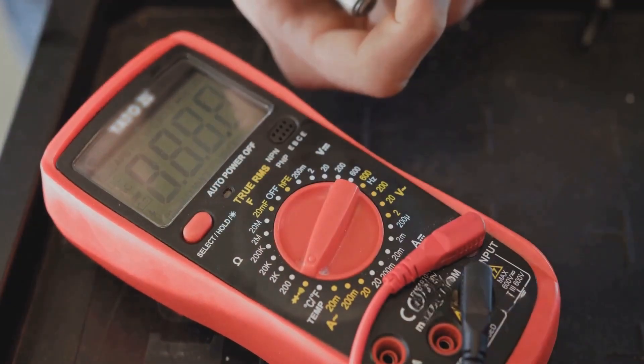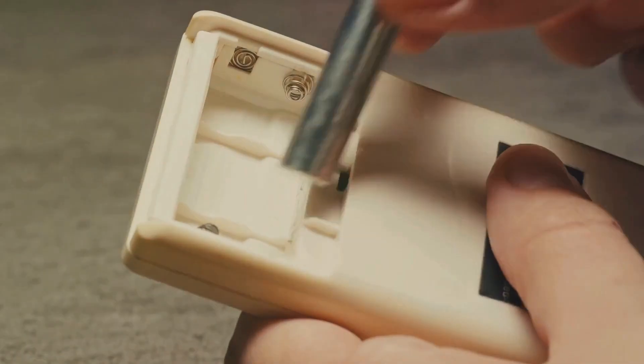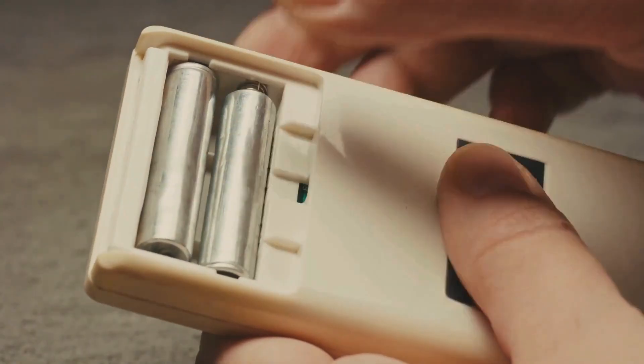Step 1: Check your batteries. This might seem too simple, but it's often the root cause of the problem. It sounds basic, but batteries are often the culprit. A multimeter with low or dead batteries won't function properly.